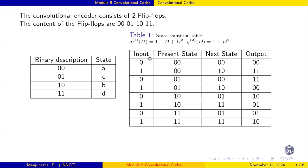Next, we will write the state transition table. For the present state, when we give input 0 or 1, we determine where it will go — which state it will reach and what the output will be. The table has four columns: present state, input, next state, and corresponding encoder output.